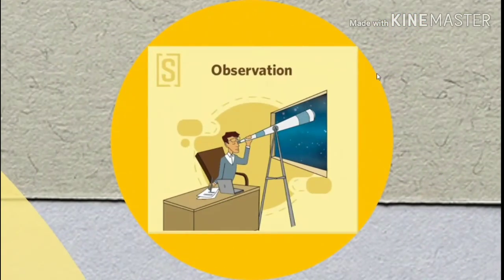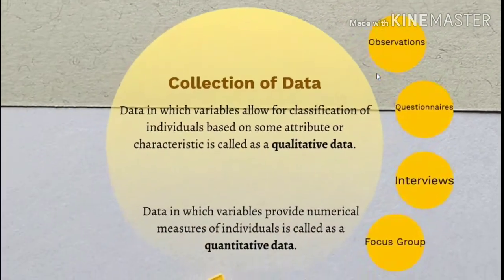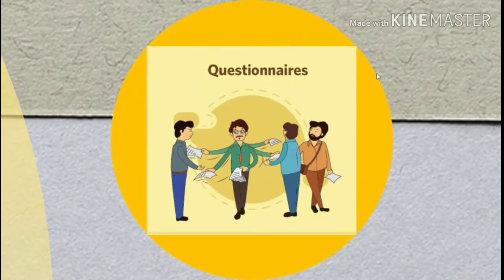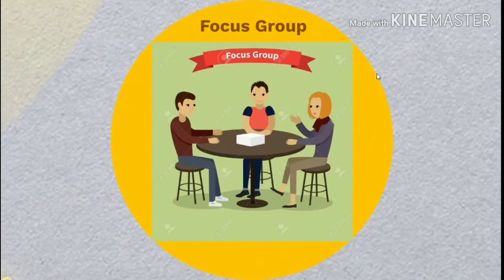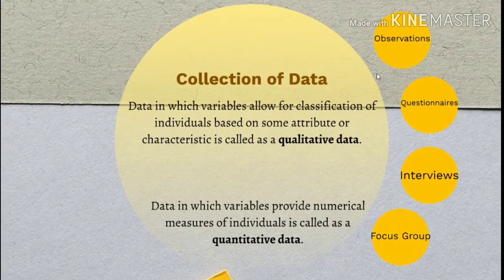There are many methods of collection of data. One of which is observation — by observing the elements related to the topic of research, we can collect the relevant data. By distributing a questionnaire to persons related to the topic of research, we can collect information from them. By taking the interview of a person related to the topic of research, we can also collect useful information for further study. By discussing the topic with related questions, we can also collect information useful for researching that topic.